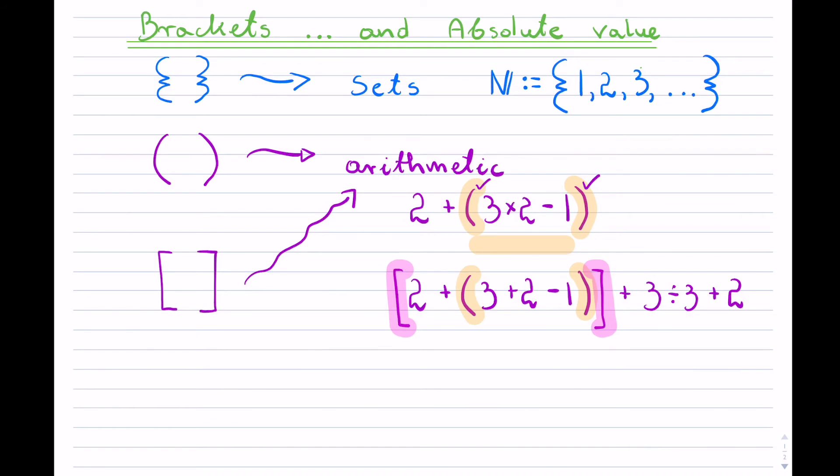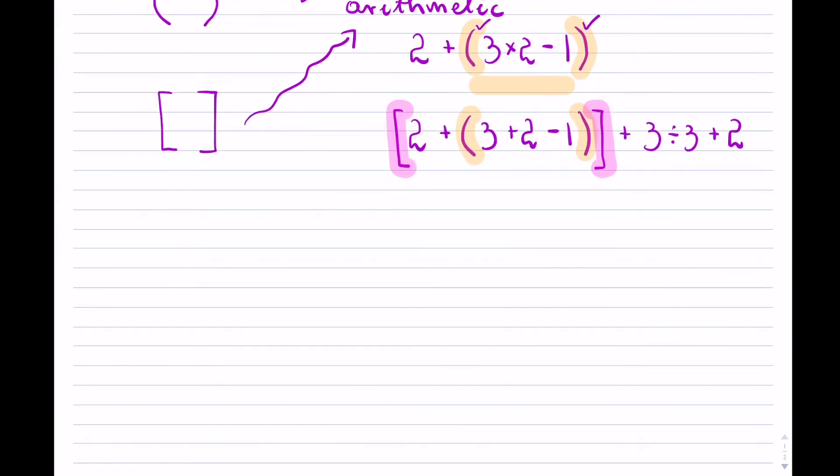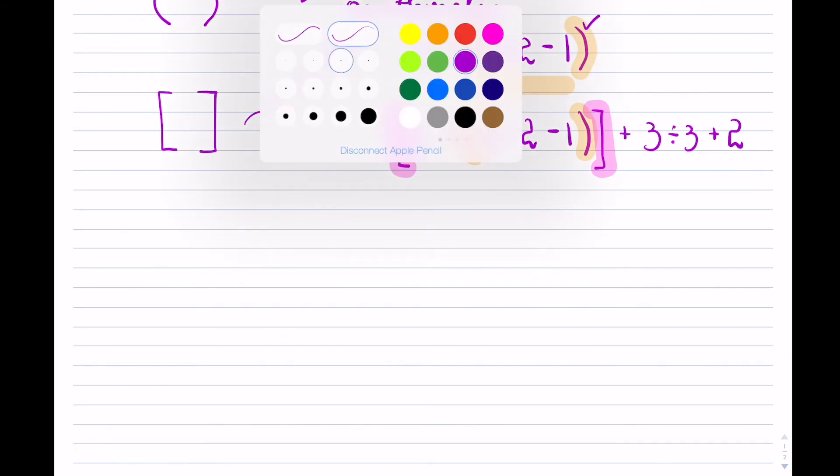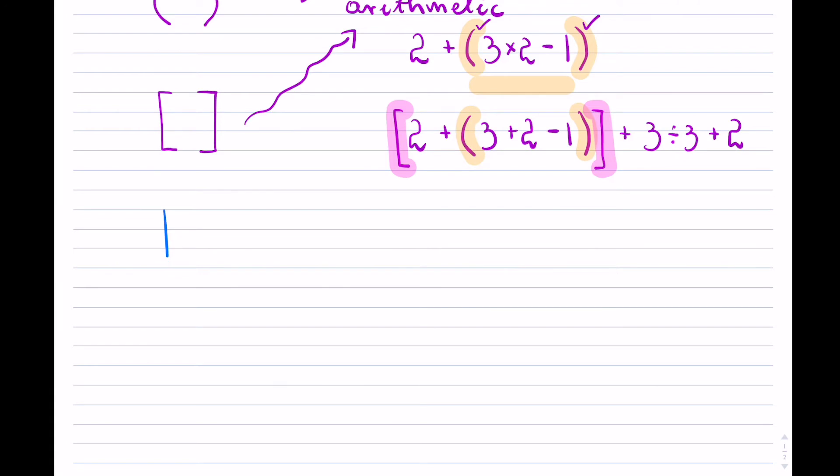Now the last bracket, which not most students are accustomed to, are just straight lines. This is called the absolute value of whatever is inside of that bracket. It is really looking for the magnitude of the number. I'll illustrate this through examples just so you know what we mean.